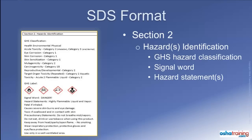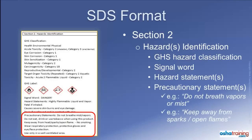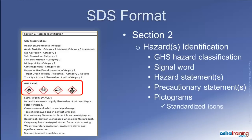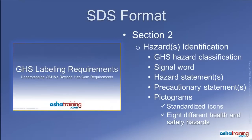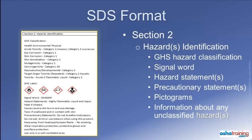Section 2 of the Safety Data Sheet also displays applicable precautionary statements, which are standardized in the GHS system and convey information about how to prevent or lessen exposure to the hazards of a product. Something fairly new to us here in the United States are pictograms — standardized icons that let workers quickly identify the types of hazards associated with the product. There are eight different pictograms for the health and safety hazards covered in the GHS system. Also included in this section is information about any unclassified hazards not covered in the GHS system, such as combustible dust.